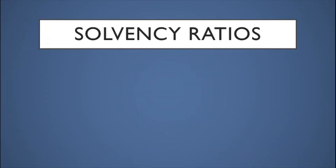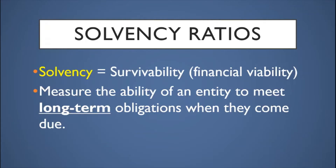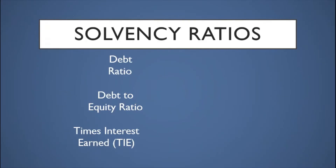We will now focus on solvency ratios. To appreciate what solvency ratios measure, we should first define solvency. Solvency means survivability or financial viability — it is the ability of the company to operate indefinitely into the future as a going concern. Solvency ratios measure the ability of an entity to meet long-term obligations when they come due, particularly non-current liabilities.